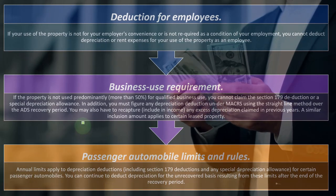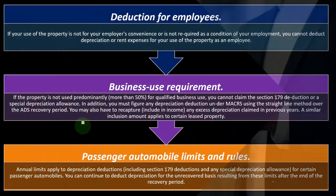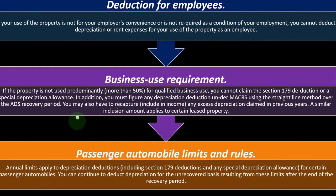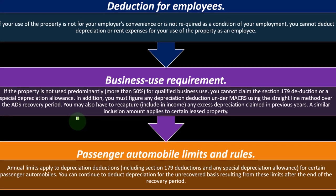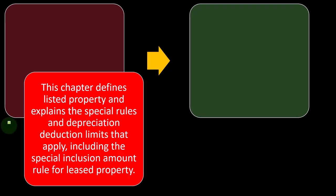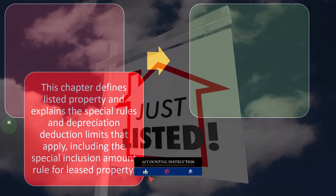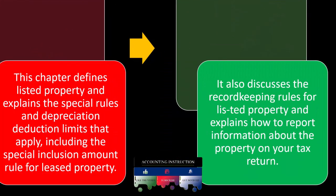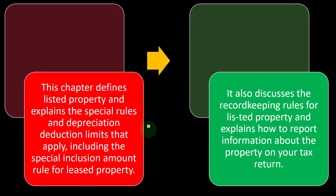Passenger automobile limits and rules: annual limits apply to depreciation deductions, including the Section 179 deduction and any special depreciation allowance for certain passenger automobiles. You can continue to deduct depreciation for the unrecovered basis resulting from these limits after the end of the recovery period. This chapter defines listed property and explains the special rules and depreciation deduction limits that apply, including the special inclusion amount rule for leased property, record keeping rules, and how to report information about the property on your tax return.